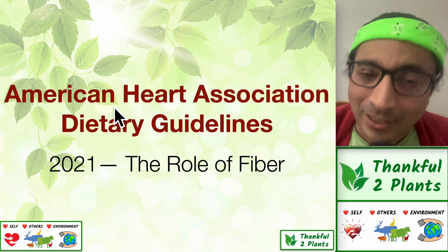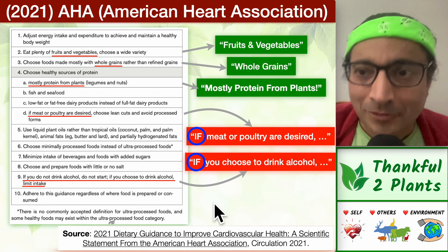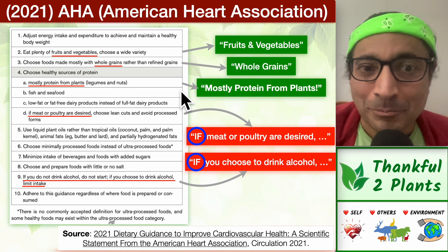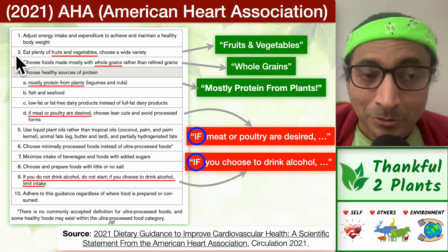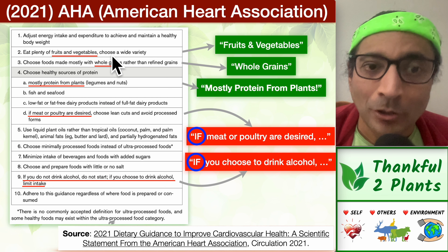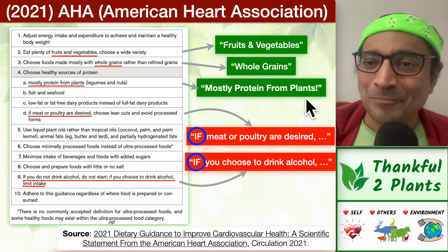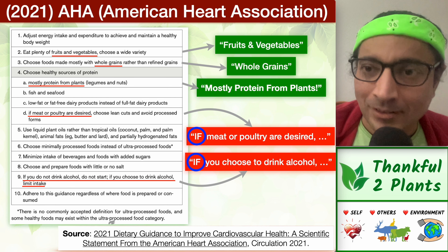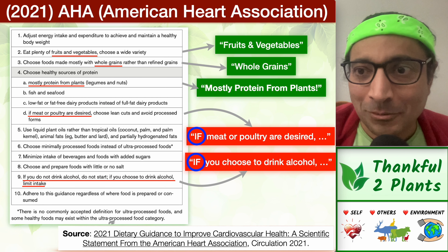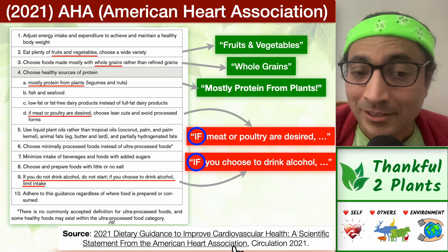With this background, let's see what the AHA dietary guidelines say about fiber. This is a textual guideline. Guideline number two is plenty of fruits and vegetables. Guideline number three says whole grains instead of refined grains. Guideline number four, fascinatingly, says mostly protein from plants. Nutrition science is progressing, and you can see what different organizations are debating — the differences and common themes.